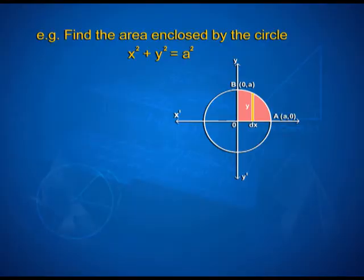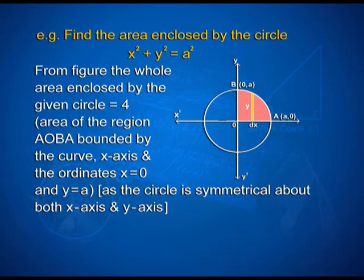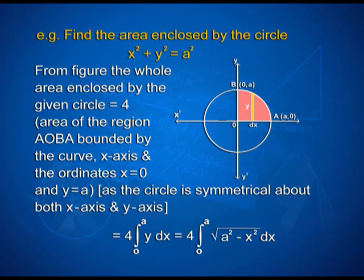Now let us solve an interesting example. Find the area enclosed by the circle x² + y² = a². For the solution, from the figure, the whole area enclosed by the given circle equals 4 times the area of the region AOB bounded by the curve, the x-axis, and the ordinates x = 0 and x = a. As the circle is symmetrical about both axes, we can write it as 4·∫₀ᵃ y dx = 4·∫₀ᵃ √(a² - x²) dx.